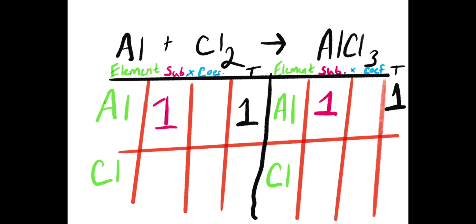Where this equation gets interesting is with the chlorine atoms. In the reactant side, we have a 2 as a subscript, and on the product side, we have a 3. Since we have put no coefficients in yet, we can go ahead and get our totals. After multiplying our subscripts by our coefficients, we see that aluminum on both sides have a total of 1. So far so good, they're equaled out.